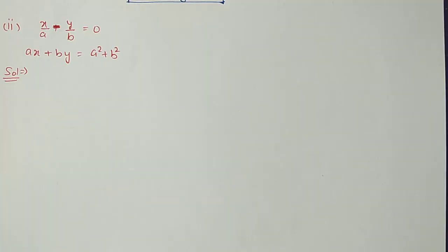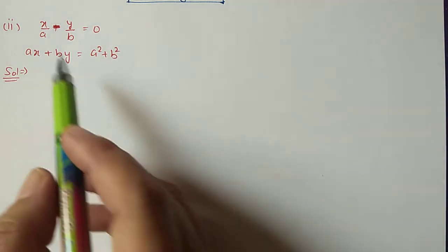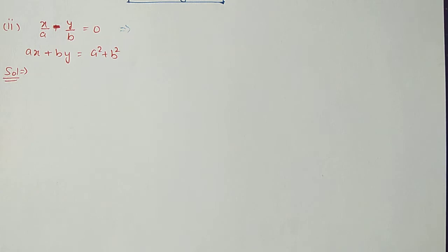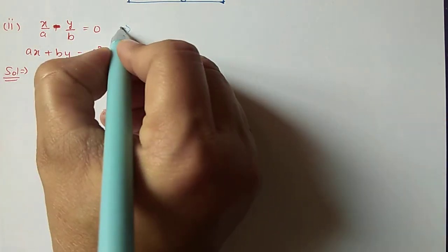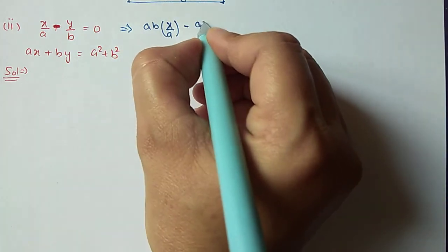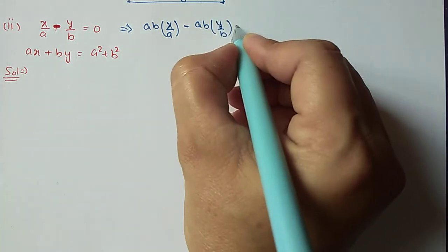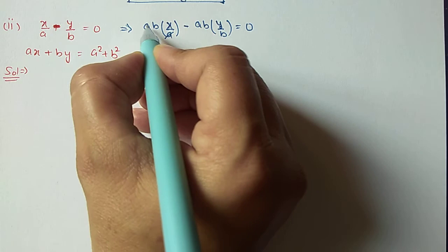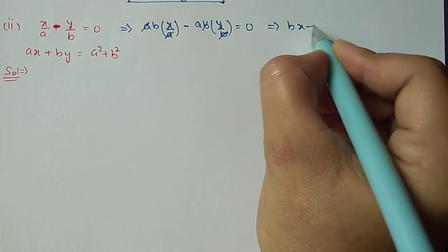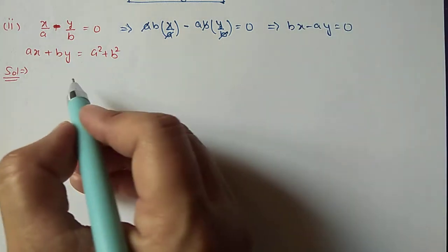Second part of question number 9: x divided by a minus y divided by b equals 0, and ax plus by equals a squared plus b squared. For the first equation we change it to its simplest form. The LCM of a and b is ab, so we multiply the whole equation by ab. It becomes ab times x over a minus ab times y over b equal to ab times 0. After cancelling a and b, the equation becomes bx minus ay equal to 0.